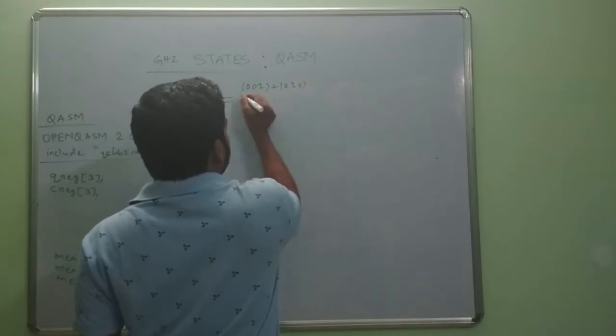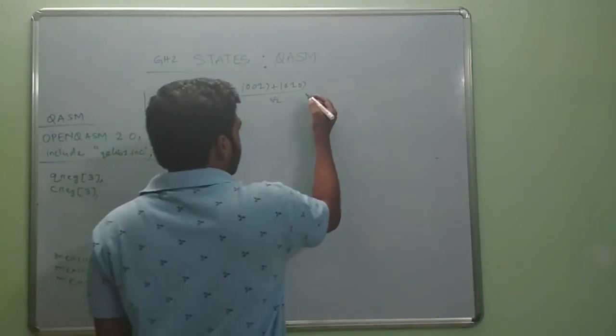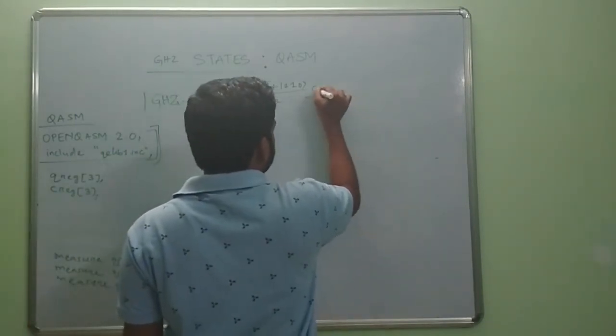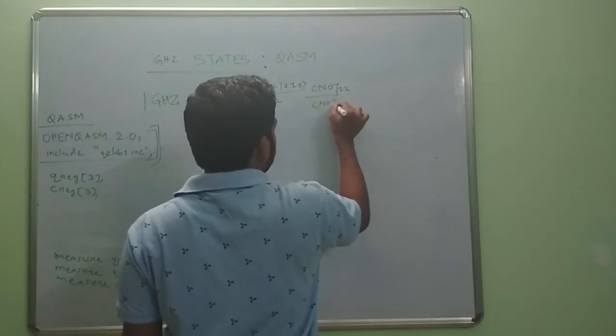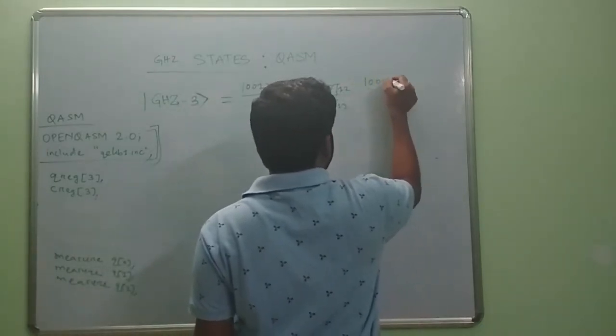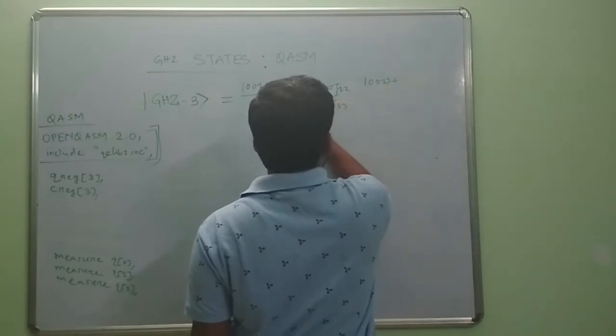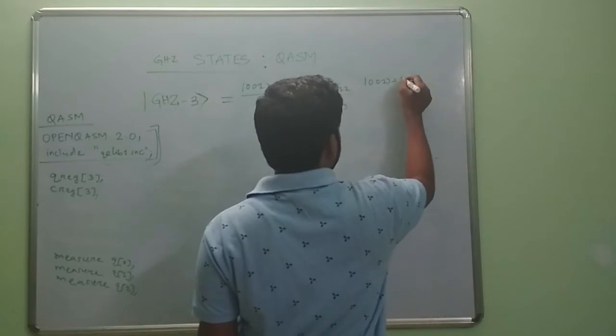Let us apply C-NOT gate from qubit 1 to 2, then C-NOT from 1 to 3. So we can have the state 001 plus 1101 by root 2.